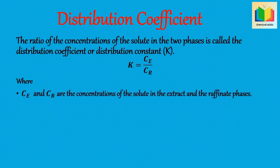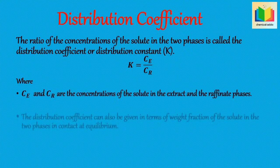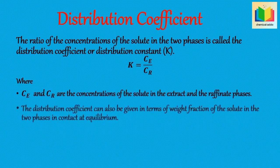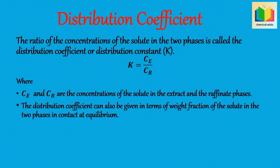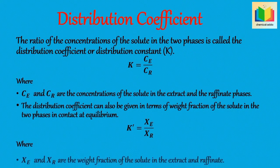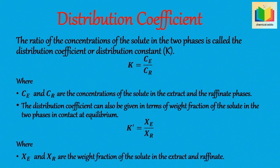Here CA and CR are the concentrations of the solute in the extract and the raffinate phases. The distribution coefficient can also be given in terms of the weight fraction of the solute in the two phases in contact at equilibrium: K = XA / XR, where XA and XR are the weight fractions of the solute in the extract and raffinate.